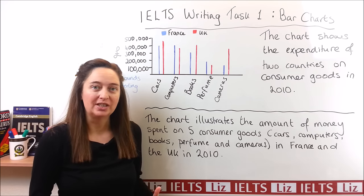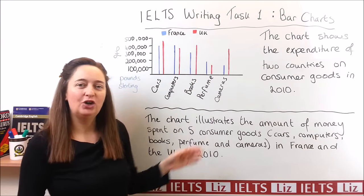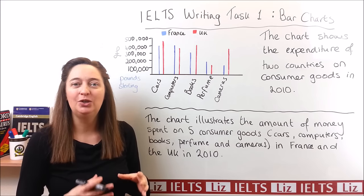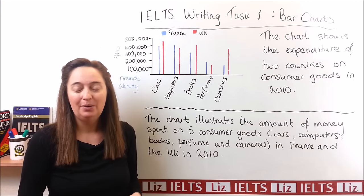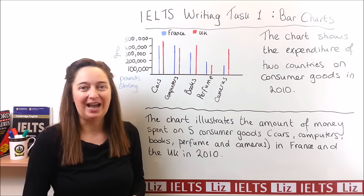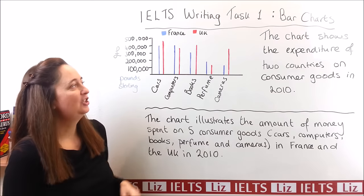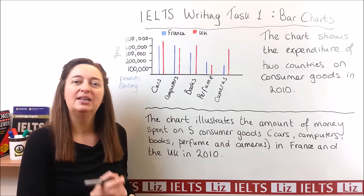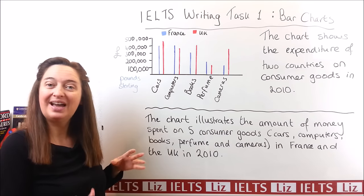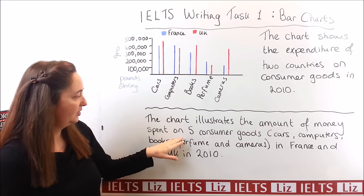Here is our introduction, so let me show you how I wrote it. The first two words, 'the chart,' you can see they're the same. I have not changed those words, and I don't recommend that you should. A chart is a chart, a graph is a graph, a table is a table. You do not need to paraphrase every word, because not all words can be paraphrased successfully in English. So it is normal for a band score nine to have some words the same. We're going to keep those first two words, then we will take a look at the verb — they say 'shows,' we can use 'illustrates.' You could also say 'gives information about.' They say 'the expenditure,' and I say 'the amount of money spent' — that's a very nice paraphrase.